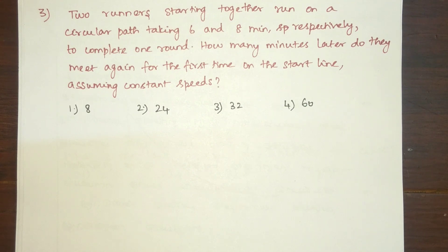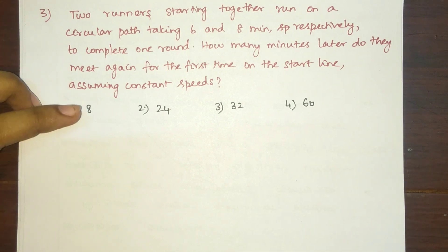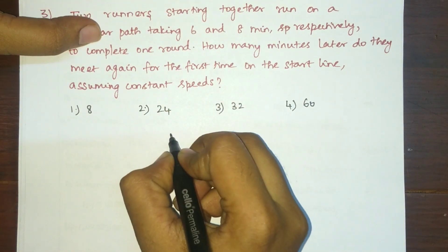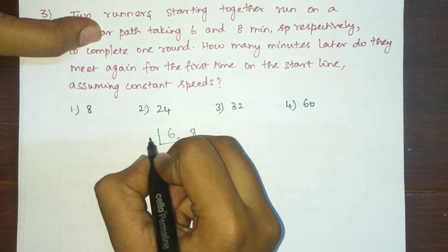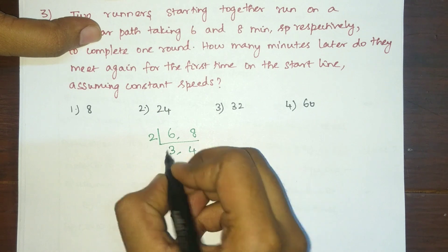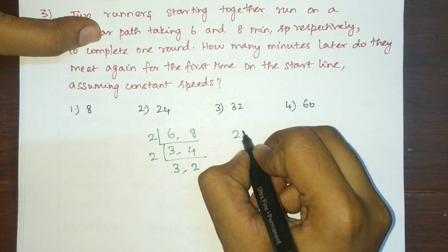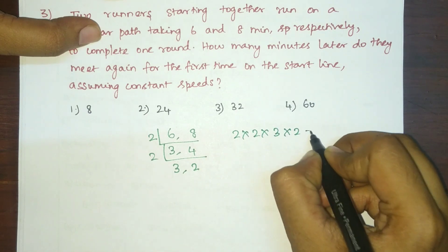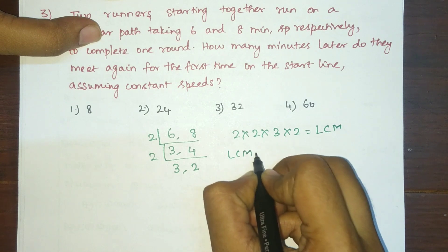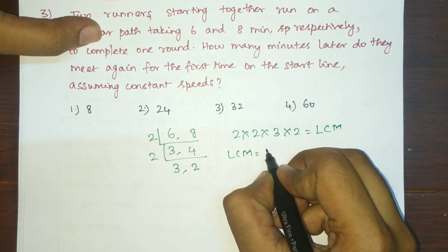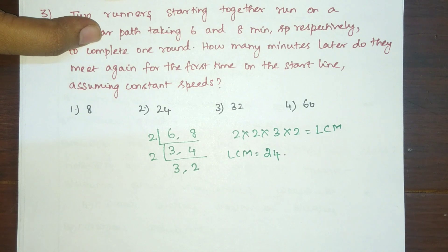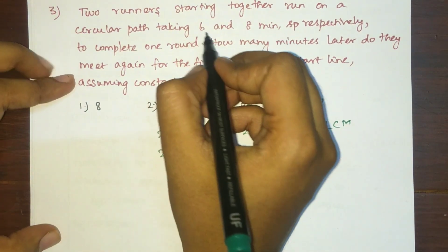The LCM is the least common multiple — it gives us the common factor shared by the two numbers. Taking 6 and 8: the common factor is 2, giving 3 and 4; factoring further we get 2 × 3 and 2 × 2. So LCM = 2 × 2 × 2 × 3 = 24.